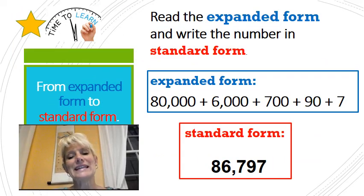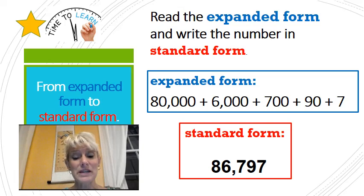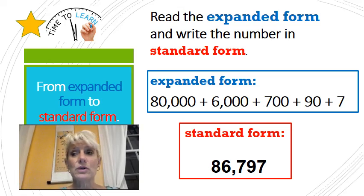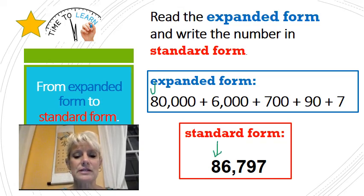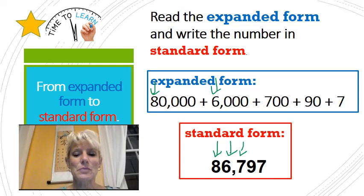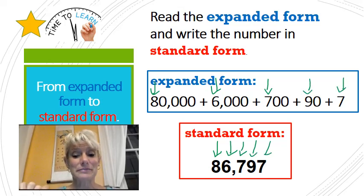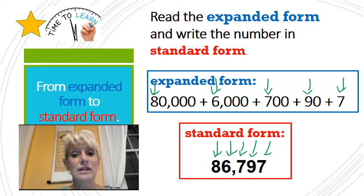Next we're taking expanded form — remember they're really big — and we're making it smaller into standard form. This eight represents eighty thousand. This six represents six thousand. This seven represents seven hundred. This nine represents ninety. And this seven represents seven. So we have eighty-six thousand seven hundred ninety-seven.